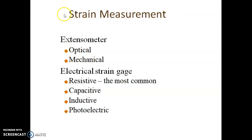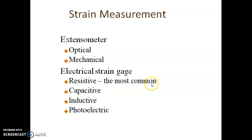In this portion we are concerned about strain measurement. Various methods are used: first is extensometers, available in optical and mechanical types. Next are electrical strain gauge types, available as resistive — the most commonly used — and also capacitive, inductive, and photoelectric. In our syllabus we study strain measurement by electrical resistive strain gauges.